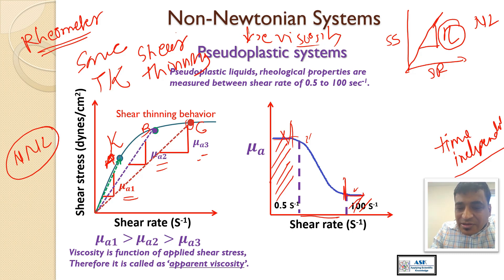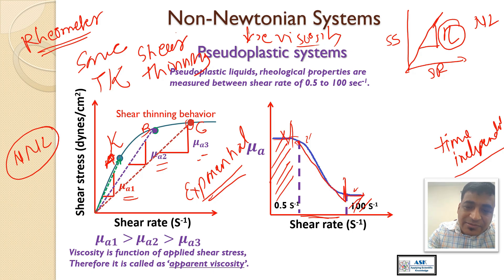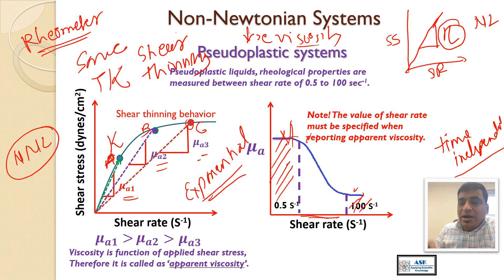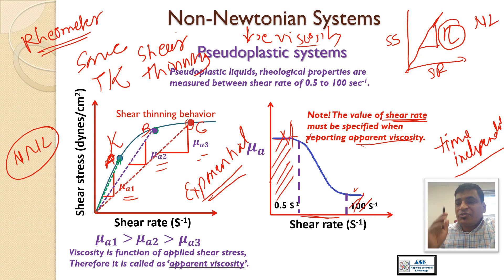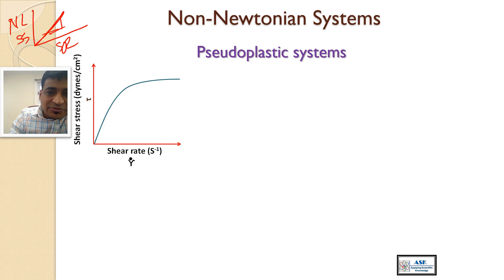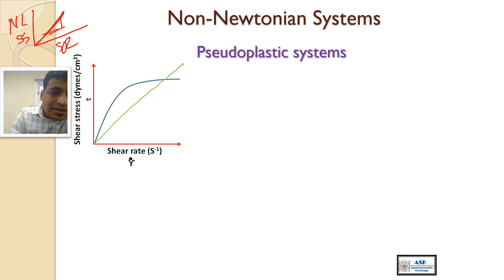Viscosity changes exponentially — not linearly — in the meaningful measurement region. Another important requirement: when reporting the apparent viscosity of a non-Newtonian liquid, you must also report the shear rate at which it was measured, otherwise the value is useless. In pseudo-plastic systems, shear stress does not increase linearly with shear rate as it does for Newtonian liquids; instead, shear stress values change exponentially.